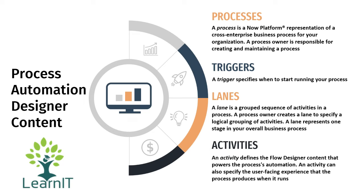A lane represents one stage in your overall business process, and under each stage we have multiple activities. An activity defines the Flow Designer content that powers the process automation. An activity can also specify the user-facing experience that the process produces when it runs.